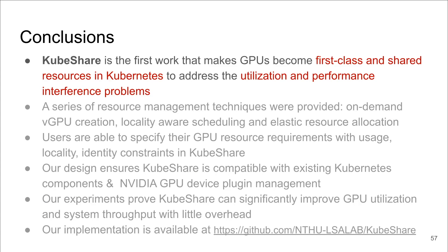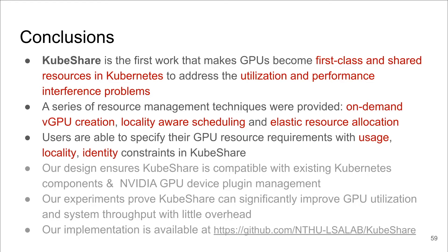To conclude our work, KubeShare is the first system that makes GPU a first-class and shared resource in Kubernetes. We proposed and implemented a series of techniques to address utilization and performance interference problems in this resource-sharing environment, including locality-aware scheduling, elastic resource allocation, and on-demand vGPU creation. Users can specify their GPU resource requirements with respect to usage, locality, and identity. Our system design ensures KubeShare is compatible with existing Kubernetes components and NVIDIA GPU device plugin management. Our experiments prove KubeShare can significantly improve GPU utilization and system throughput with little overhead. Our implementation is available on GitHub, and any feedback is welcome.